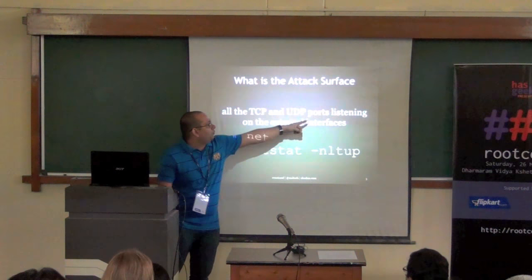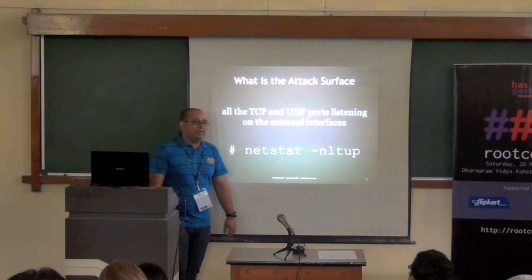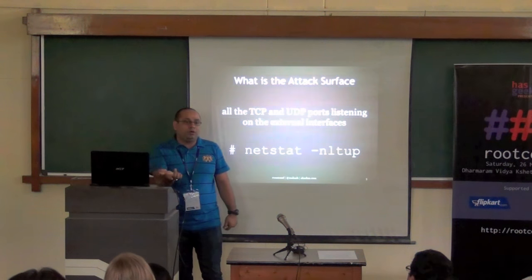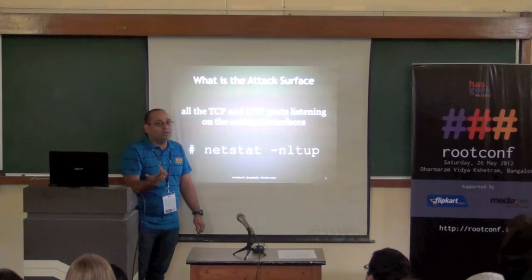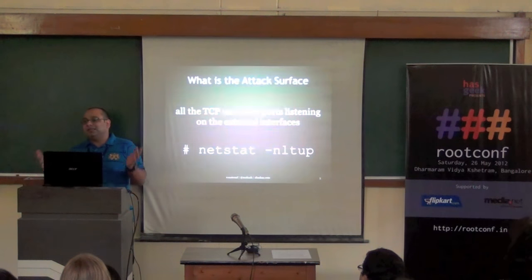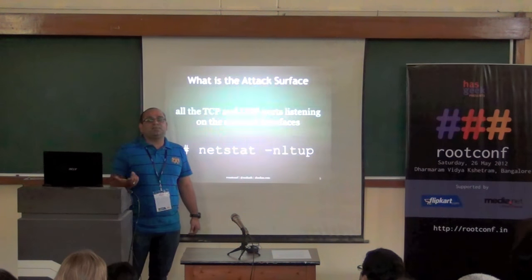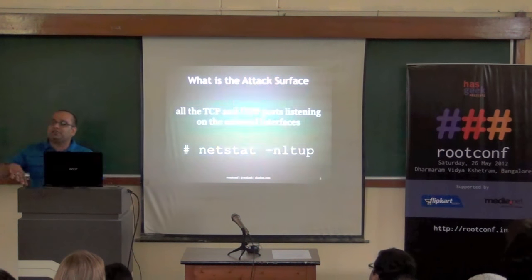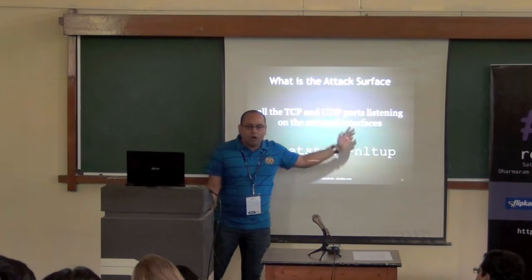This is only for ports listening on external interfaces. If it says 127.0.0.1, that's localhost. If it says 0.0.0.0 or in IPv6 format 0::something, that means it's listening on all interfaces. This tells you: on the external interface, someone can reach this port number. The question is how do we reduce this attack surface.